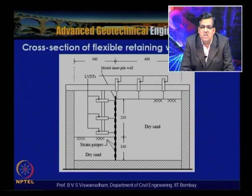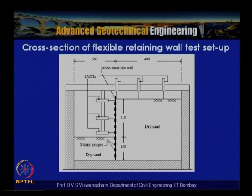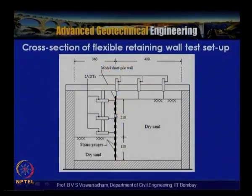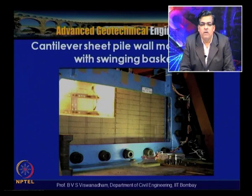The plane strain container is 76 cm in length, 20 cm in breadth, with a retaining height of 21 cm, embedded depth of 15 cm, and the wall is 2 cm above the container base. LVDTs are used to measure surface settlements and lateral movements, and strain gauges measure bending moments during flight. The model is mounted on the swinging basket of the large beam centrifuge at IIT Bombay.